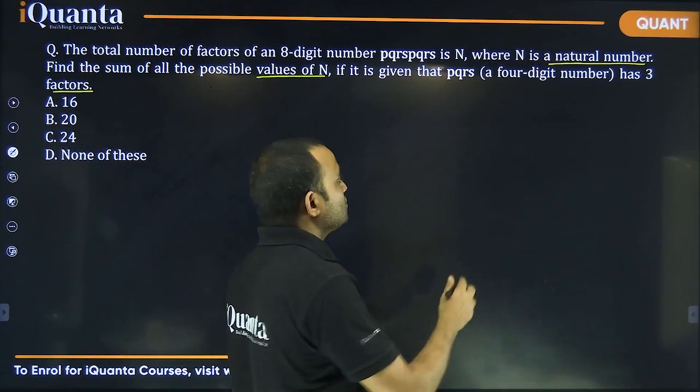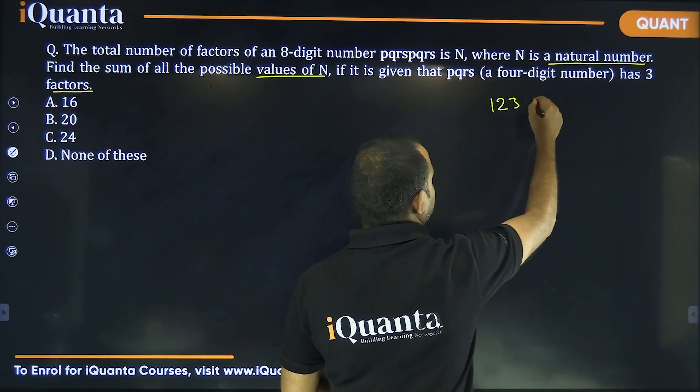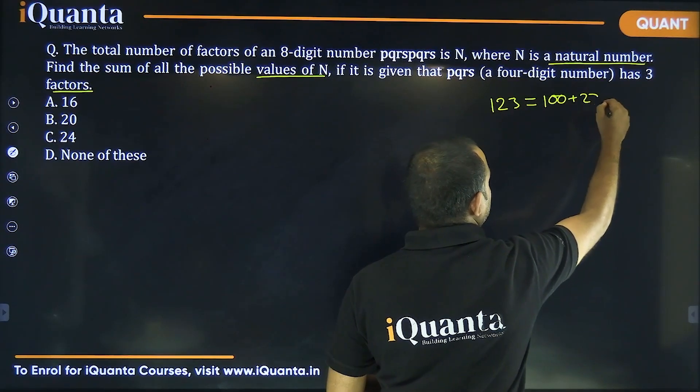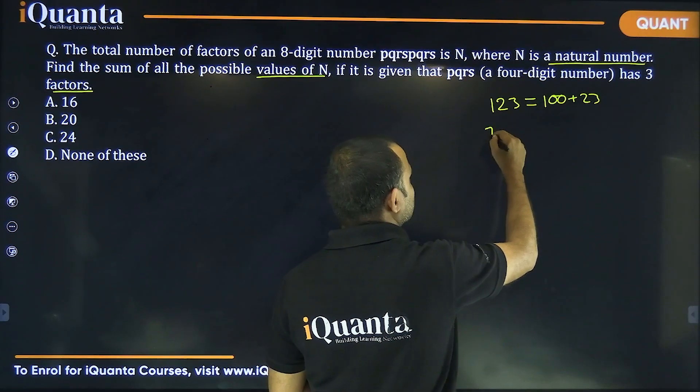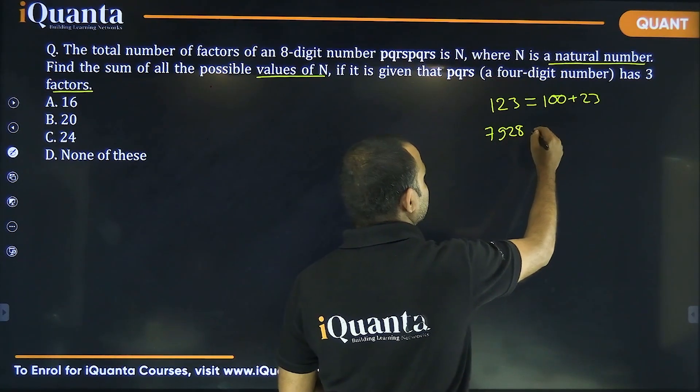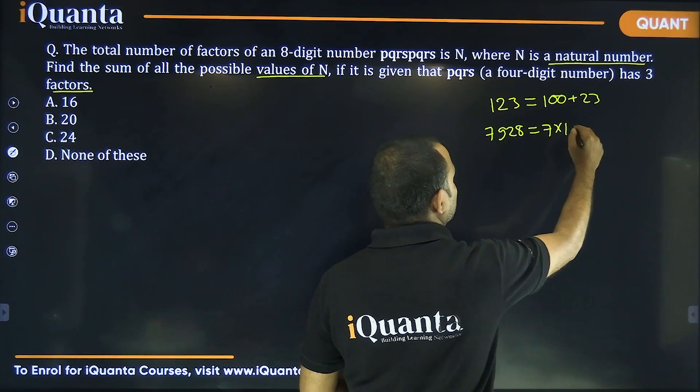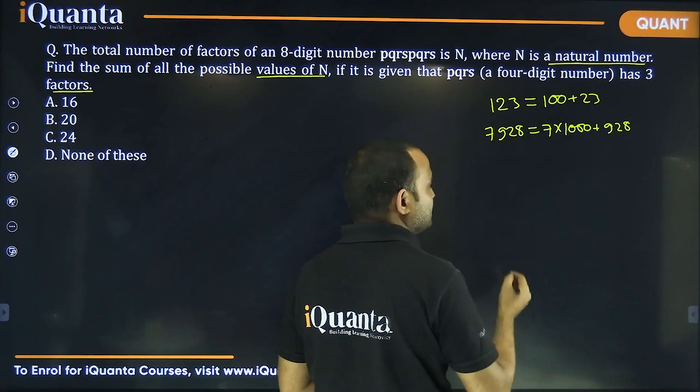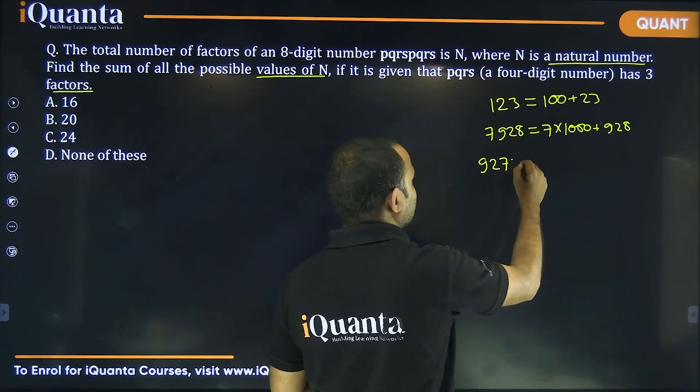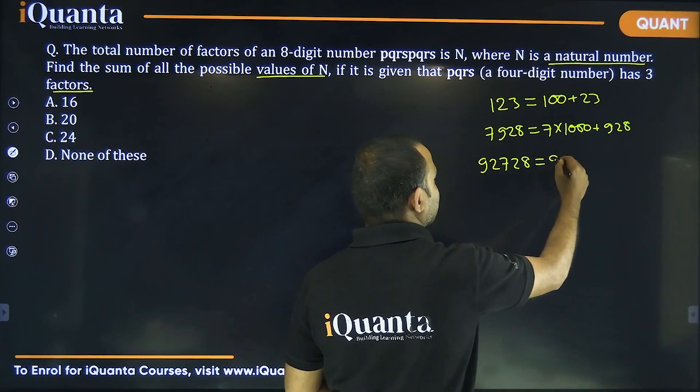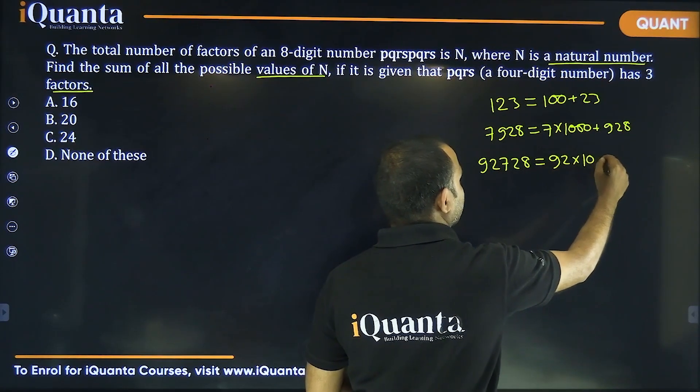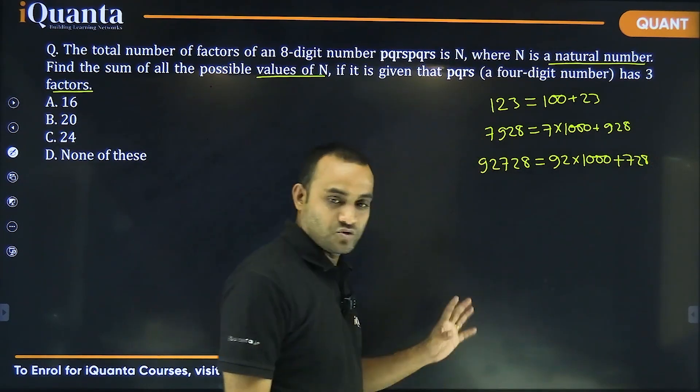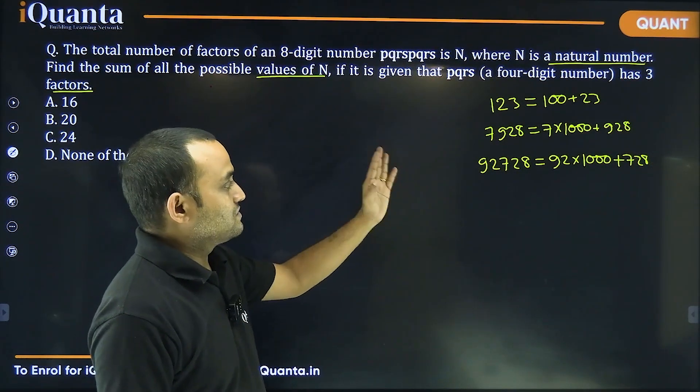So, for example, if we have 123, can we write it as 100 plus 23? Then we have 7928. Can we write it as 7 into 1000 plus 928? If we have 92728, then we can write it as 92 into 1000 plus 728 and so on. So, just understanding this,